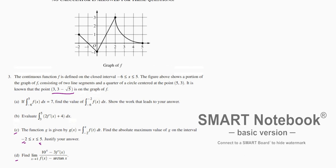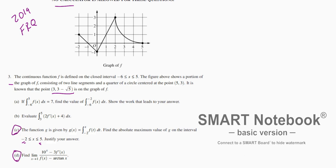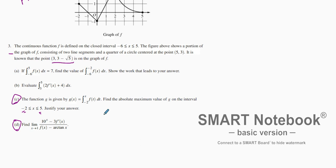Alright, welcome back. We're going to continue our discussion on the 2019 free response question, no calculator, number three. We're going to be looking at parts C and D. We'll start with letter C first. Letter C is asking us to find the absolute minimum values, given that G of x is defined by this function right here.